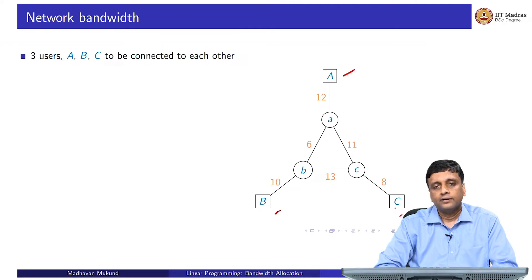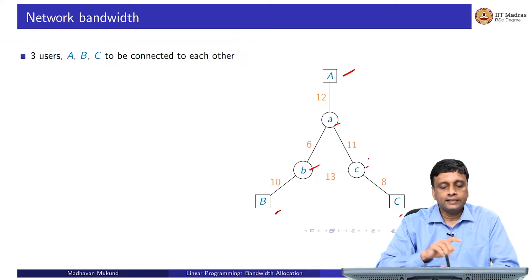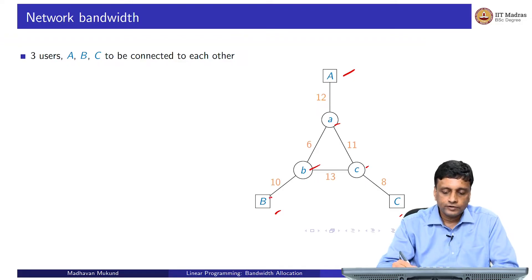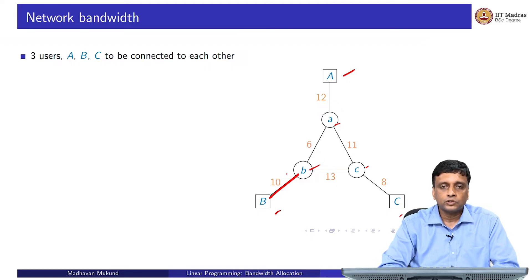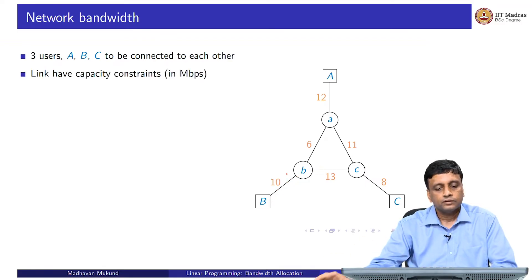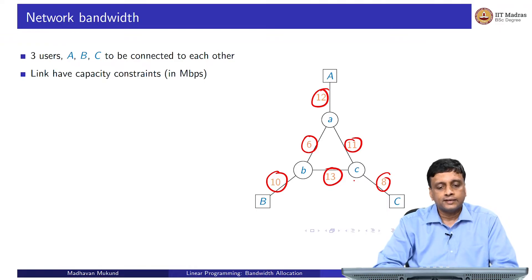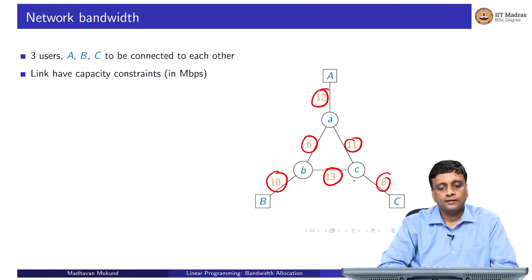This company would like a certain quality of internet connection between its three locations. Small a, small b, and small c are the nearest hubs maintained by the internet service provider. Each company office is linked to the nearest hub of that ISP, and these hubs are linked to each other. The service provider has to connect these offices — capital A, capital B, and capital C — through its network. The numbers along these links represent bandwidth capacity in megabits per second — they are capacity constraints.